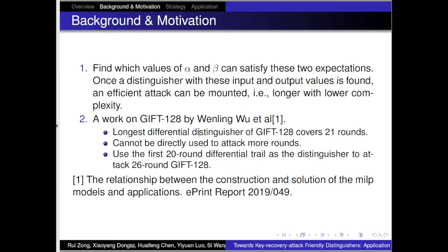Once a distinguisher with these input and output values is formed, we can mount an efficient attack — covering more rounds with lower complexity. We also notice that prior work on GIFT-128 by Wen Li Wu gives the longest differential distinguisher of GIFT-128 covering 21 rounds, but it cannot be directly used to attack more round functions. In their paper, they use its first 20-round differential trail as a distinguisher to attack the 26-round version of GIFT-128.